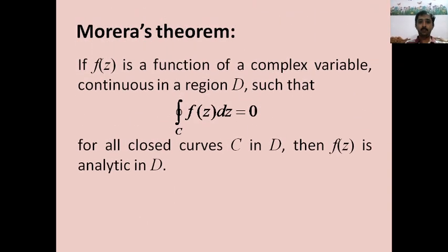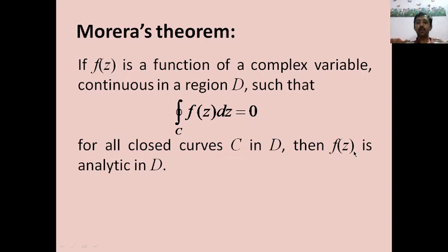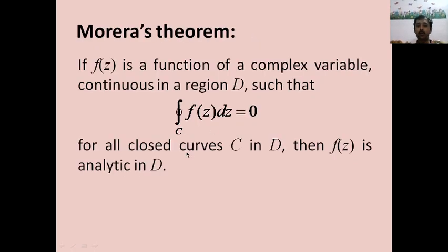To start with Morera's theorem, here is the statement: if f(z) is a function of a complex variable continuous in a region D, such that the integral over C of f(z) dz equals 0 for all closed curves C in D, then f(z) is analytic in D. This statement is the converse of Cauchy's integral theorem, which says that if f(z) is analytic inside a simple closed curve C inside a domain D, then the integral over C of f(z) dz is 0.